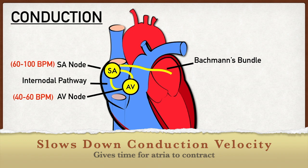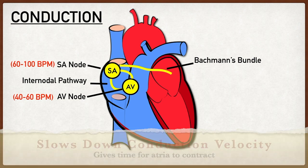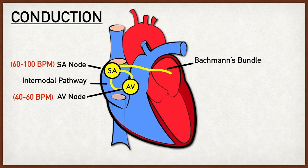Another important function of the AV node is that it slows down the conduction velocity of the action potential. This is important because it allows time for the atria to contract before the ventricles depolarize and contract. If there were no delay, the atria and ventricles would contract simultaneously, which would be counterintuitive and would affect blood flow. We want the atria to first contract and push blood into the ventricles, then the ventricles contract to push blood into the pulmonary circulation and the rest of the body.